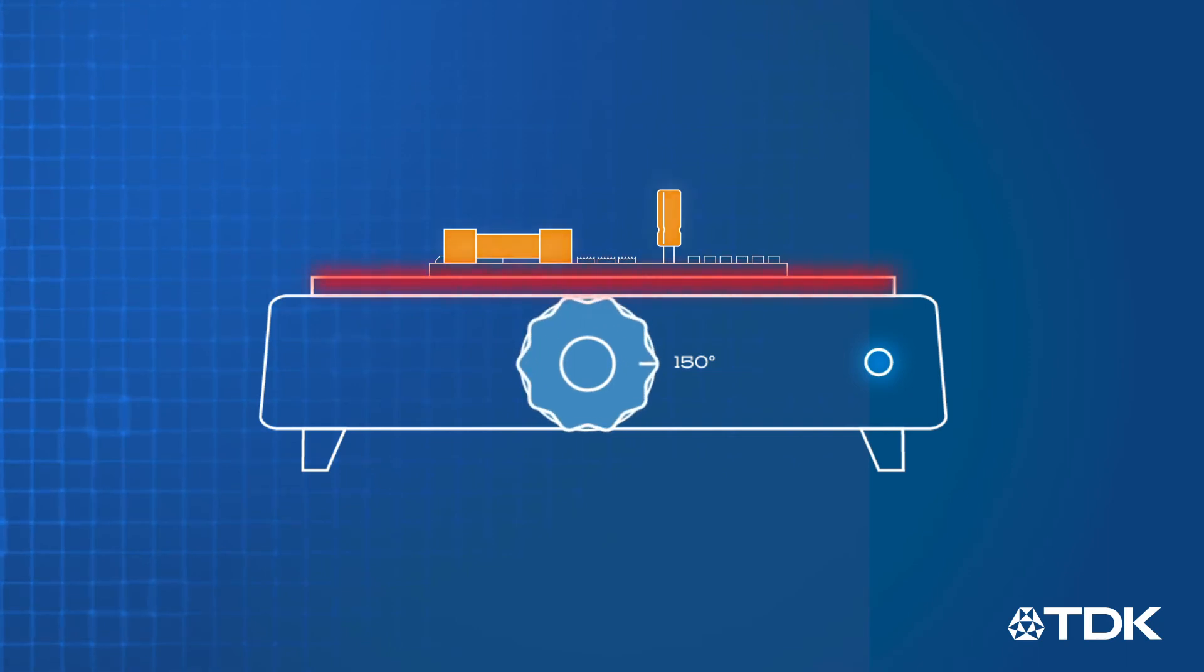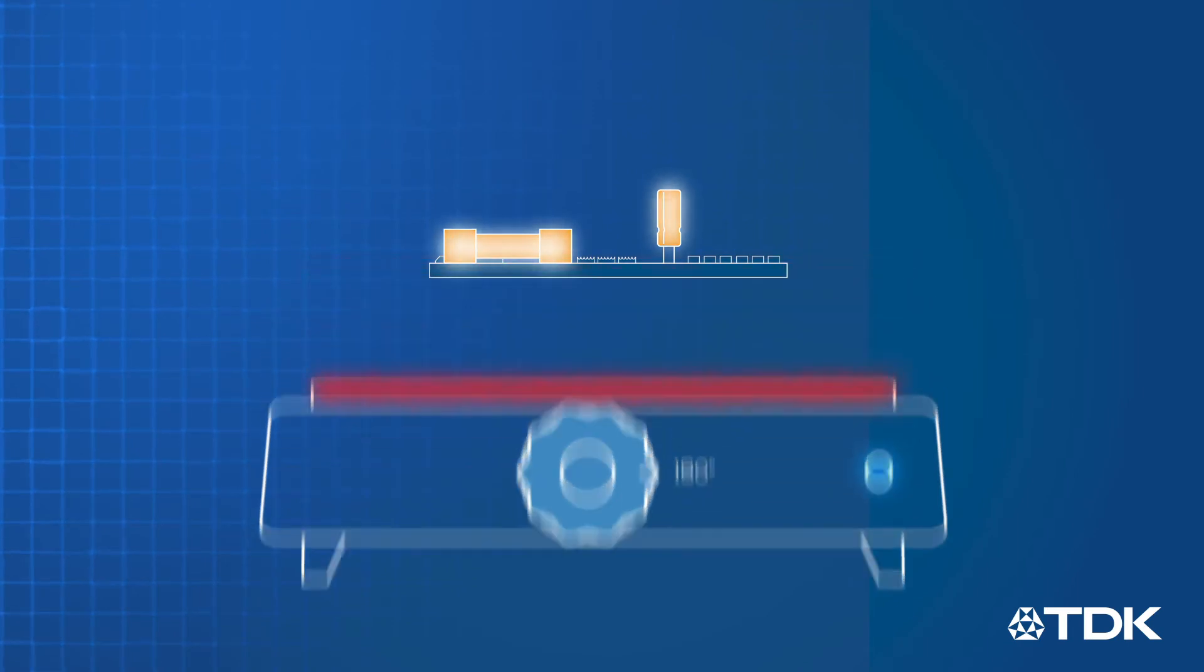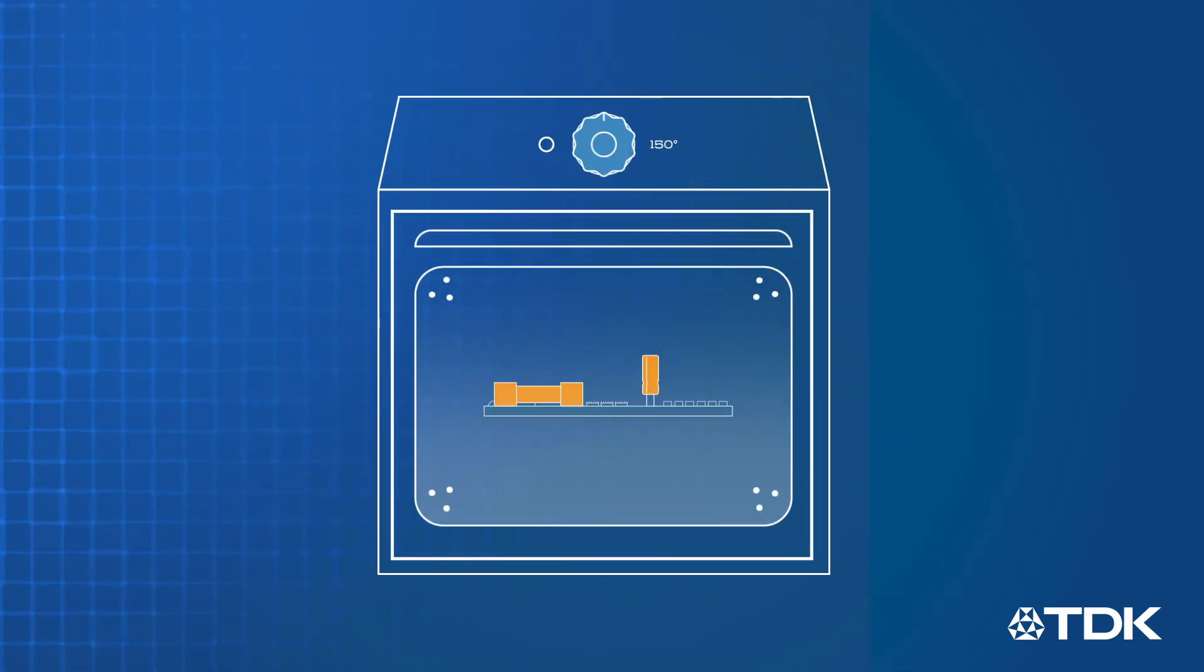Single-sided PCBs can be placed on a circuit board preheater or a hot plate set at 150 degrees Celsius, while double-sided PCBs can be preheated by forced air with the temperature set between 150 and 175 degrees Celsius and the air nozzle about 0.25 to 0.5 inches from the solder joint.